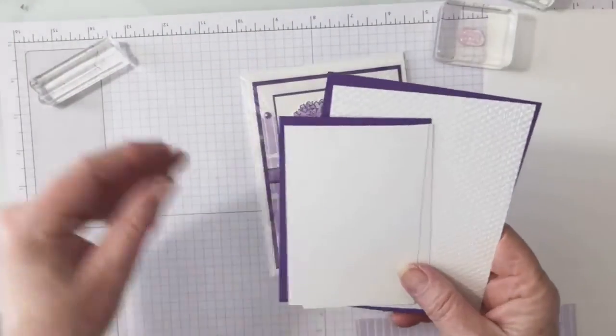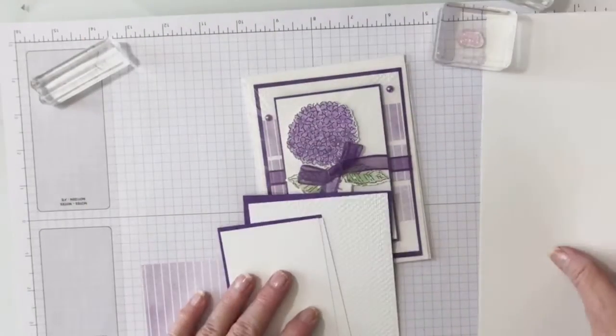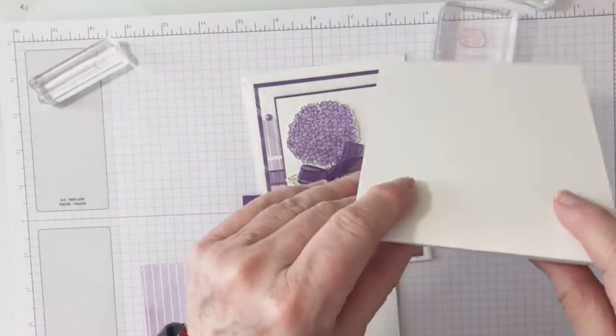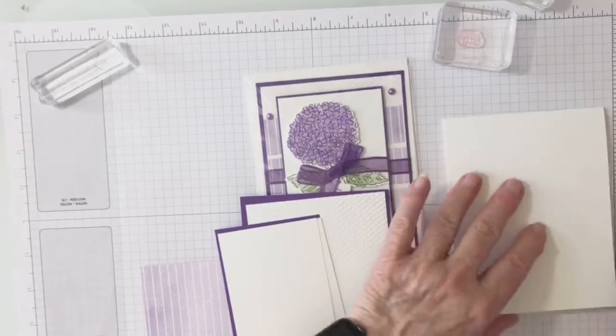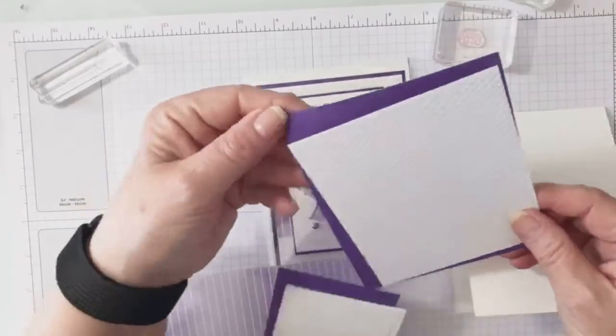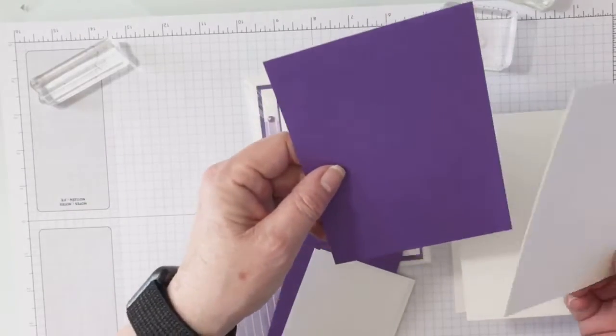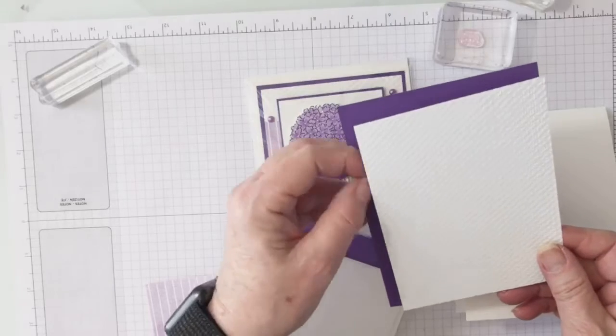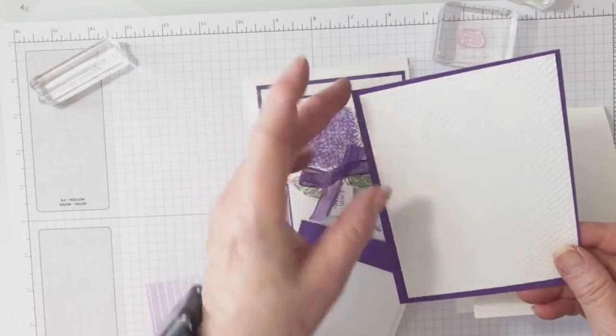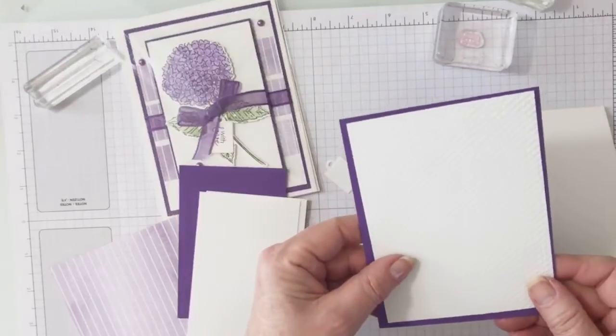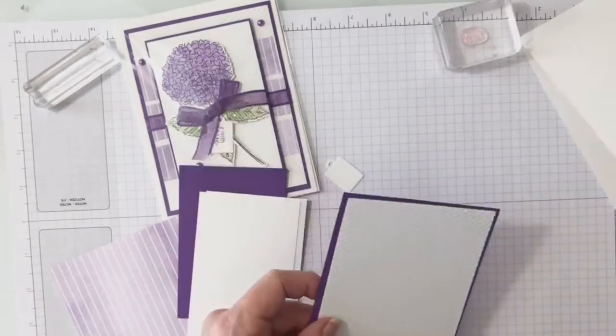There's your cardstock, your card base which is here. I'm just going to fold that in half. And then you have a piece of gorgeous grape and a piece of basic white which has been embossed with a textured embossing folder. Let's go ahead and put those two together.